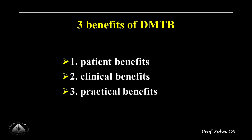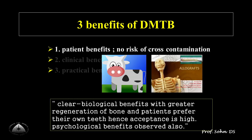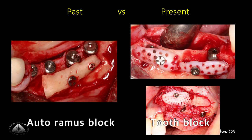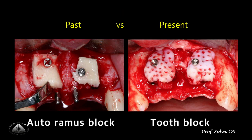Firstly, patient benefits. From the patient's point of view, tooth bone has no risk of cross-contamination, unlike animal- or human-origin bone. Secondly, clinical benefits. From the clinician's point of view, tooth block bone simplifies three-dimensional ridge augmentation, and surgical time is greatly shortened because tooth block bone is prepared before surgery at chairside. Patient postoperative discomfort is also reduced because a donor site is not required.